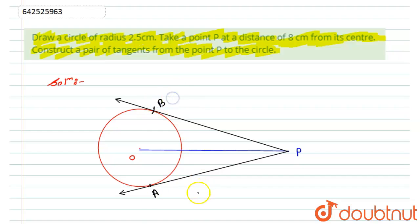So these are the two tangents, that is PA and PB. So here is the solution for this particular question. I hope you will like this solution. Thank you.